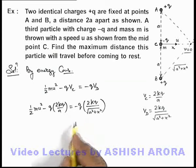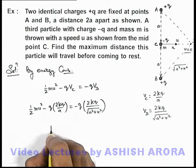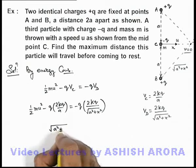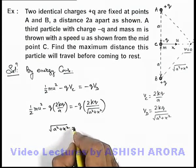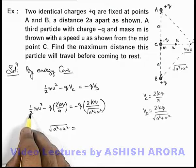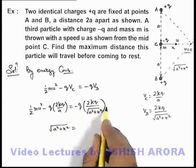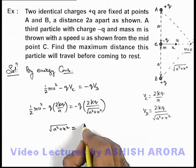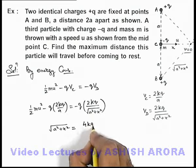Then on simplifying this expression we get the value of √(a²+x²) equal to - you can take this 2 on the other side or multiply the whole expression by 2, so this will become 4kq²